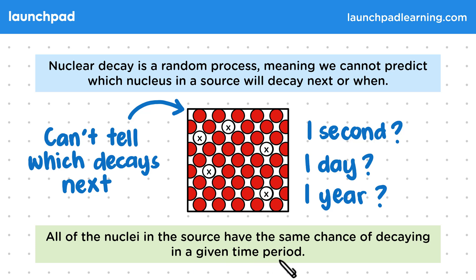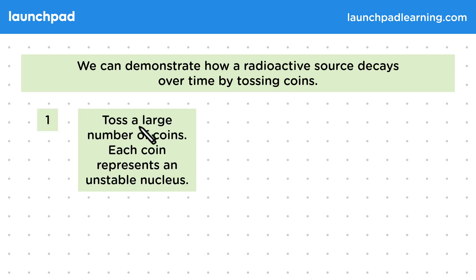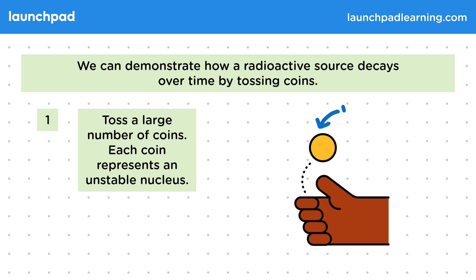So how exactly do we demonstrate how the nuclei in a system decay? Well, we can demonstrate how a radioactive source decays over time by tossing coins. This is an experiment you can easily try at home. Start by tossing a large number of coins — each coin represents an unstable nucleus in a system.